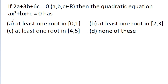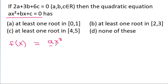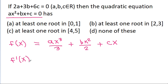We have ax squared plus bx plus c is equal to 0, and if we take a function f(x) equal to ax cubed by 3 plus bx squared by 2 plus cx, then f prime of x will be equal to 3ax squared by 3, which is ax squared, plus 2bx by 2, which is bx, plus c.